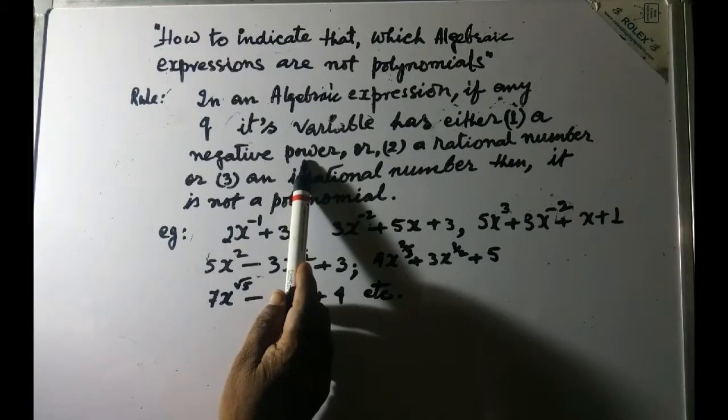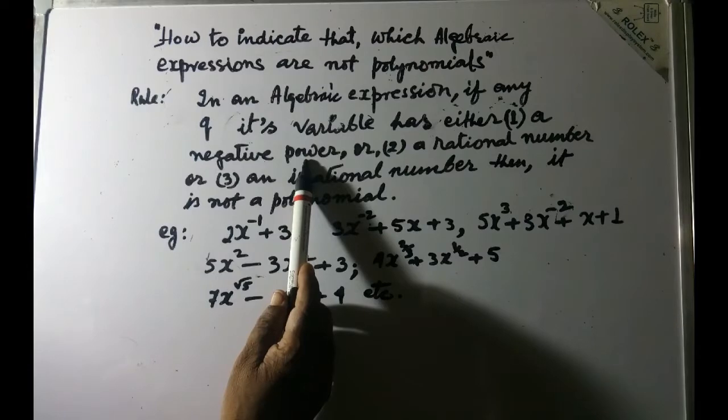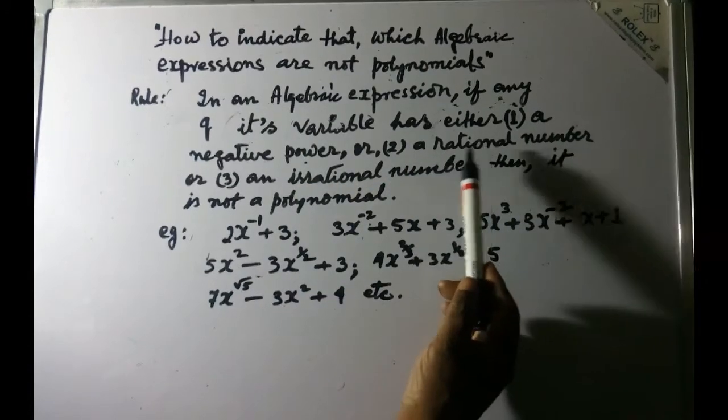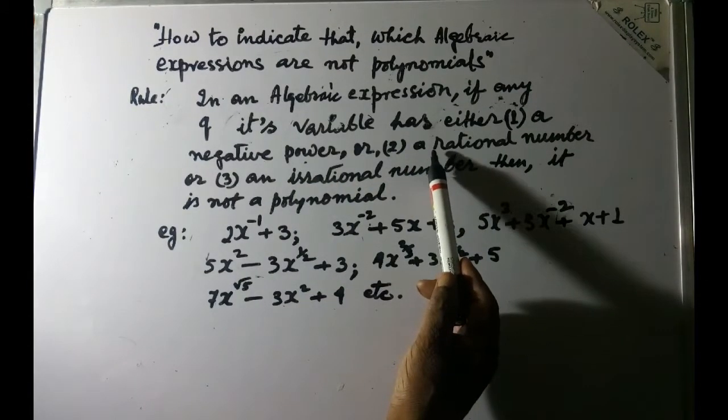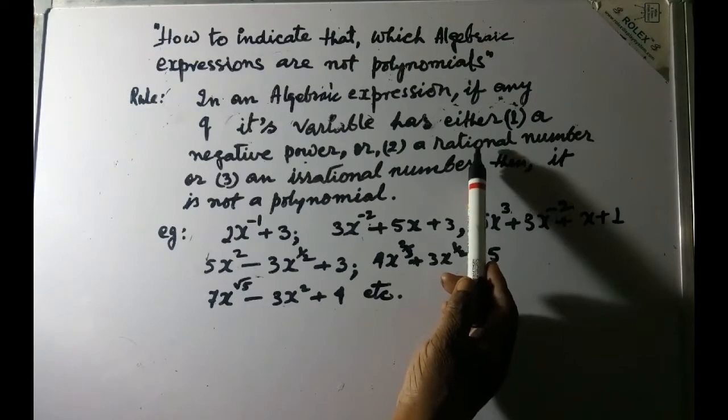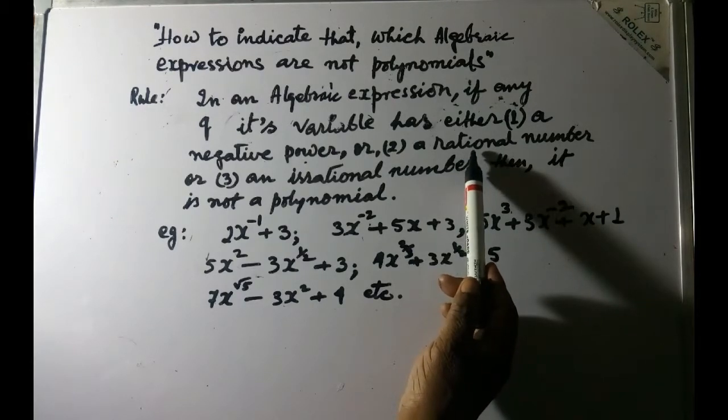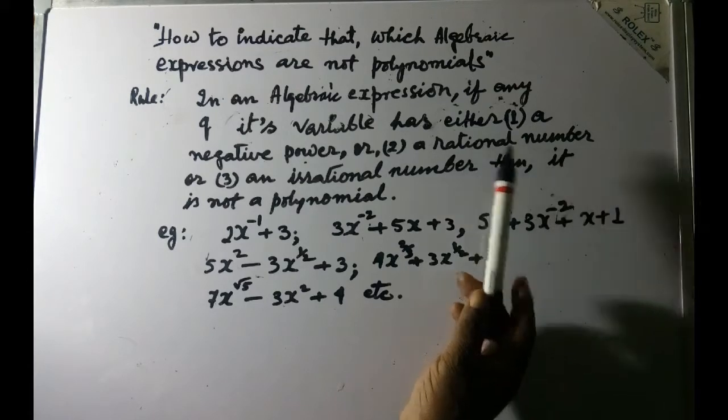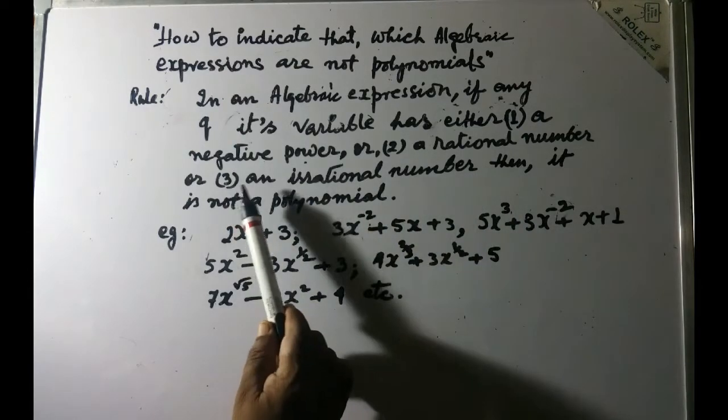Or sometimes you may find that the power of the variables, either one or all of them, have rational numbers. Then also you can say that it is not polynomial.